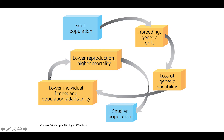When that happens, if individuals aren't surviving to reproduce, then we have a lower reproduction rate, and if our population can no longer adapt to a changing environment, then we'll have more individuals dying. Because of the lowered reproduction and higher mortality, we get an even smaller population, and this cycle will begin over again until eventually the population goes extinct, unless some change is made that allows for an increase in genetic variability and an eventual rebound in population numbers.